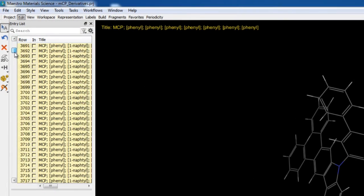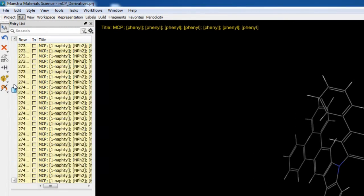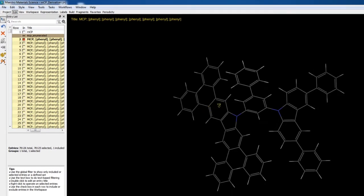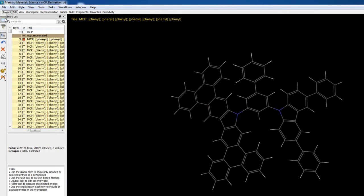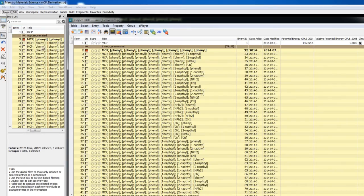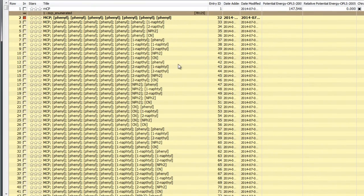Once the job finishes, we can see all 78,000 structures, clearly a very convenient and efficient means of generating large chemical libraries. Notice that each is labeled with the applied substituents in brackets.